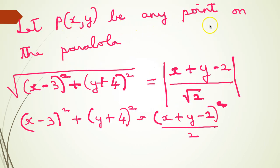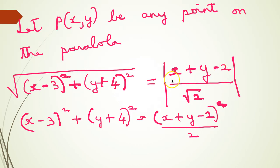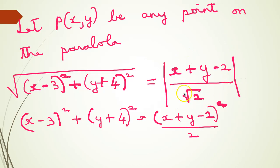Let P be any point on the parabola. Distance of P from the focus equals square root of (x - 3)² + (y + 4)², and this equals the distance of P from the directrix. Using the straight line distance formula, the distance from the directrix is |x + y - 2| / √(1 + 1), that is divided by √2. Squaring both sides, we get (x - 3)² + (y + 4)² = (x + y - 2)² / 2. The formula for distance of point (x₁, y₁) from ax + by + c = 0 is |ax₁ + by₁ + c| / √(a² + b²).